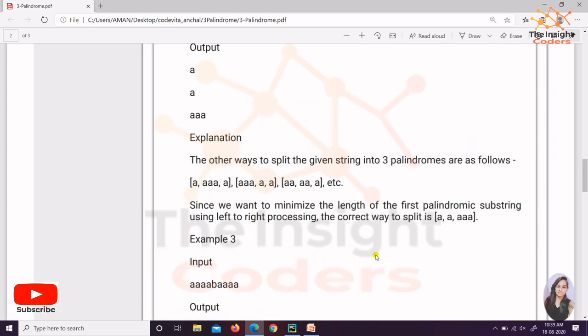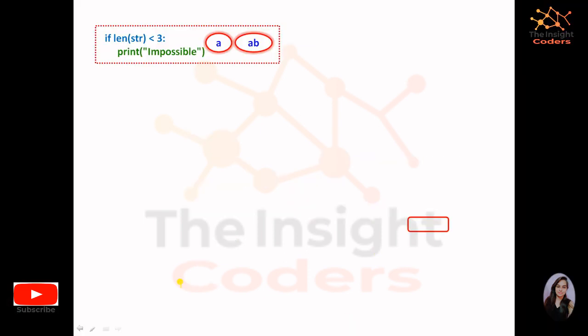So let's see the logic for this question. The very first condition: if the length is less than 3 — meaning the length is either 1 or 2 — we can't make 3 palindromes because we don't even have 3 elements. So simply print 'Impossible'.